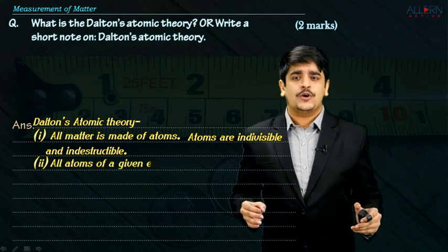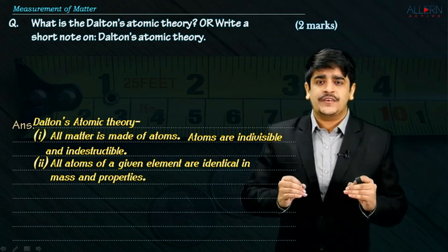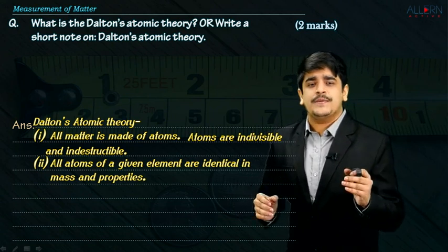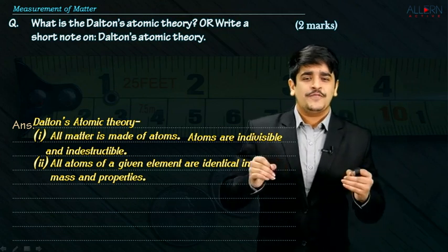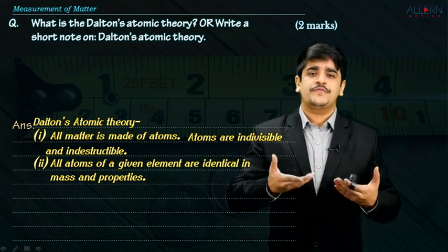The second point says, and I quote, all atoms of a given element are identical in mass and properties. Now, think about this carefully. If you have a bar of gold in front of you, gold is an element and it is ultimately made up of gold atoms.